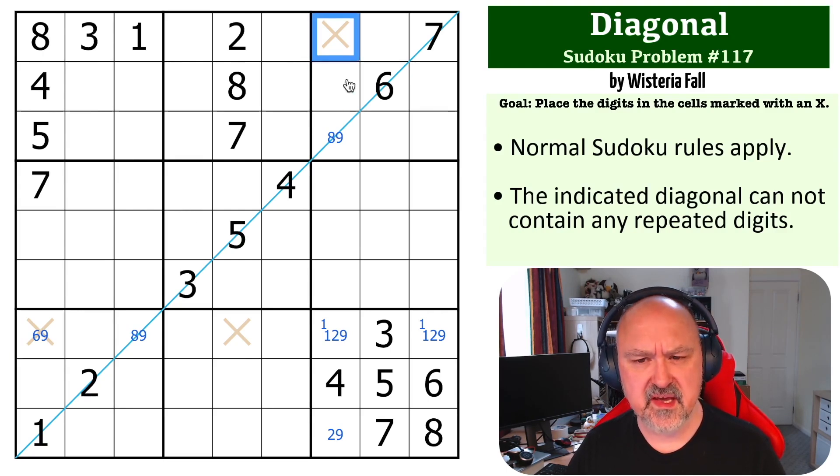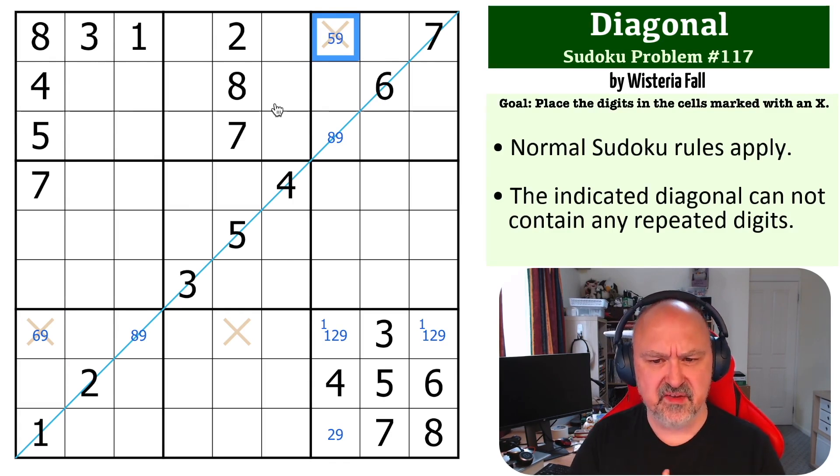And then I looked up here, and I went, hang on a minute, this is also restricted. It can't be 1, 2, 3, 4, 6, 7, or 8. So this is only 5 or 9. So those are heavily restricted.